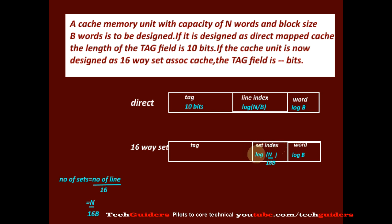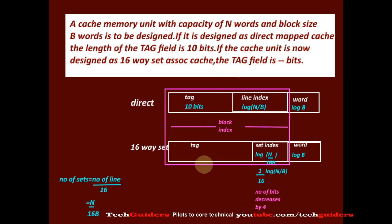The number of bits required for the set index will decrease compared to the number of bits required for the line index. We can write it as (1/16) × log(n/b), which is 2 raised to minus 4 into log(n/b), meaning the number of bits decreases by 4. Since the total number of bits for the physical address is the same in both cases, when 4 bits decrease in the set index, 4 bits must increase in the tag field. So for 16-way set associative mapping, the tag field is 10 + 4 = 14 bits.